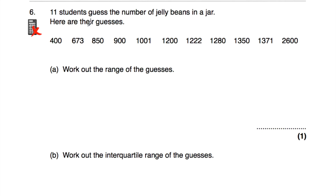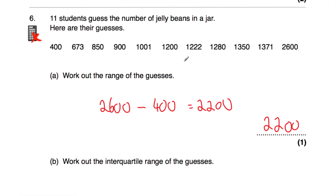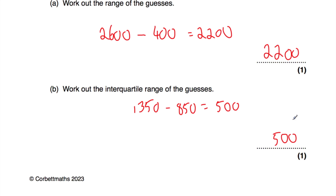Question number six: 11 students guess the number of jelly beans in a jar — the guesses are in order. Part A: work out the range. The highest number subtract the lowest: 2600 take away 400 equals 2200. Part B: find the interquartile range. The median is the 6th value. The lower quartile is 850 and the upper quartile is 1350. So the interquartile range is 1350 take away 850 equals 500.